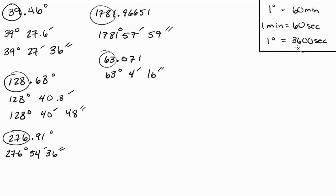Anyway, okay, so let's do, well now let's go backwards. Let's go backwards. As a matter of fact, let's use the examples that we have right here: 39, 27, 36; 128, 40, 48; 276, 54, 36. You see, these are good numbers actually and they are going to be, I'm just going to introduce this with these particular numbers.